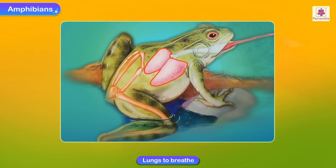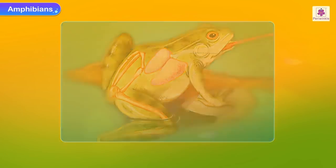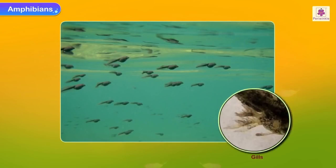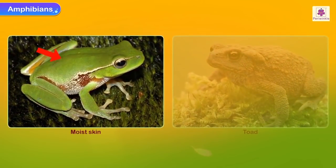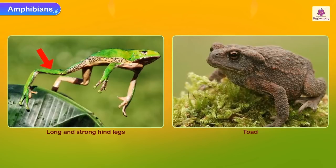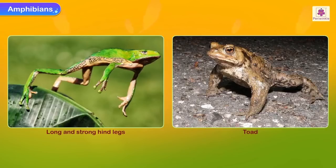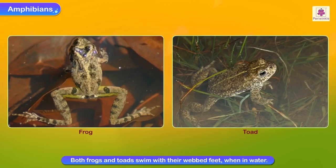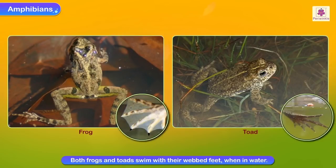Amphibians have lungs to breathe when they are on land. The young ones of these animals live in water and breathe through gills. Frogs have a moist skin which helps them to breathe when in water, while toads normally have dry skin. Frogs have long, strong hind legs to jump; toads walk on land and have shorter hind legs. Both frogs and toads swim with their webbed feet when in water.